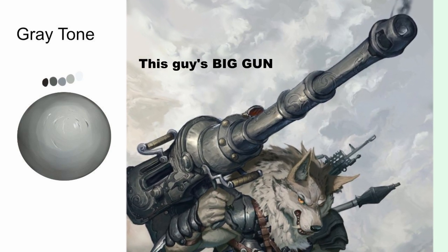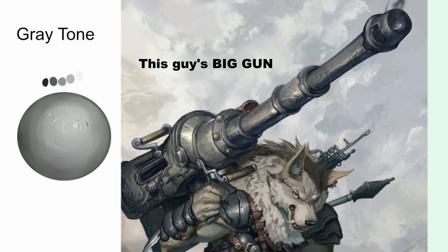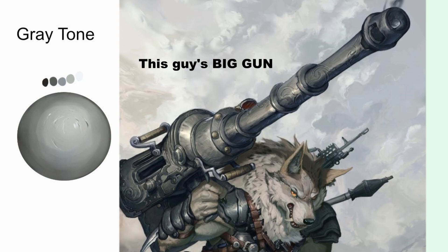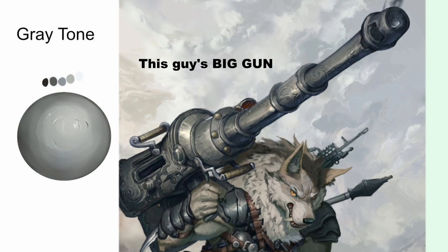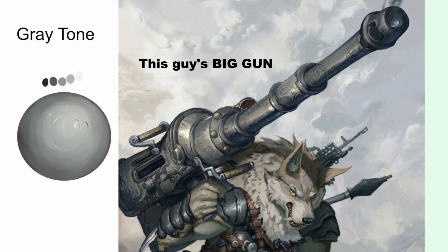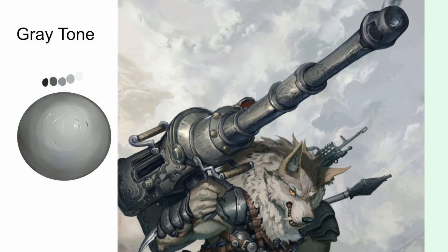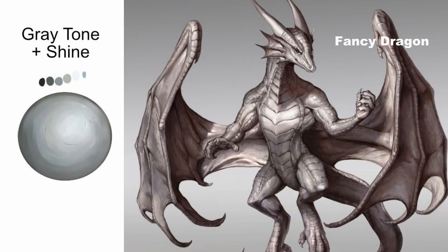Let's step back and start with gray tone once again. Here we have an example with a werewolf with a very big gun, and we're going to focus on the metallic shine of the gun, which is a very gray tone. For gray tone plus shine, we have the fancy dragon, which is the gray tone but with a lot of shine — the hints of shine start to develop throughout its body the more lighting you put into it.